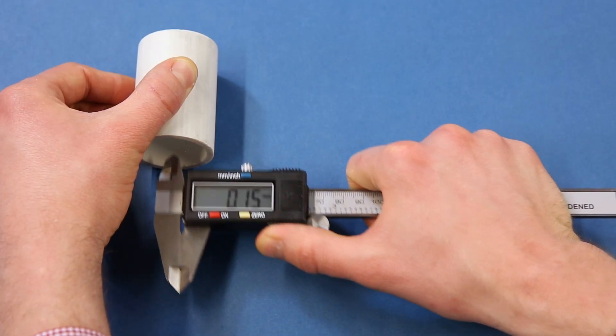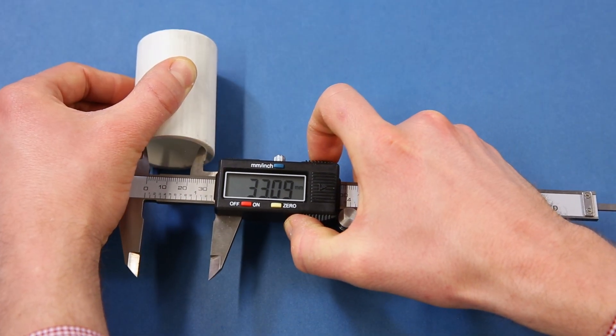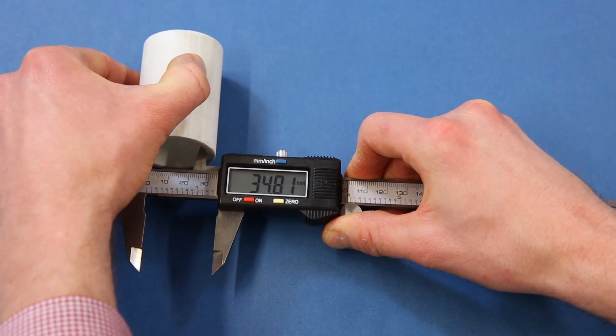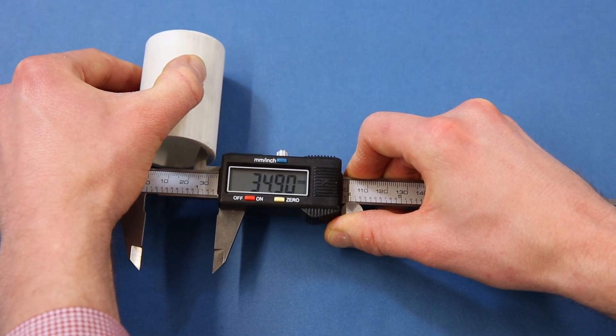To get an internal measurement, use the internal jaws. Similarly, you'll want to wiggle the object so the jaws fit nicely in the opening to get the maximum reading possible.